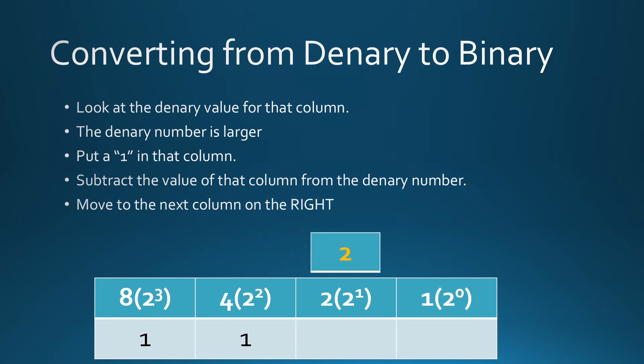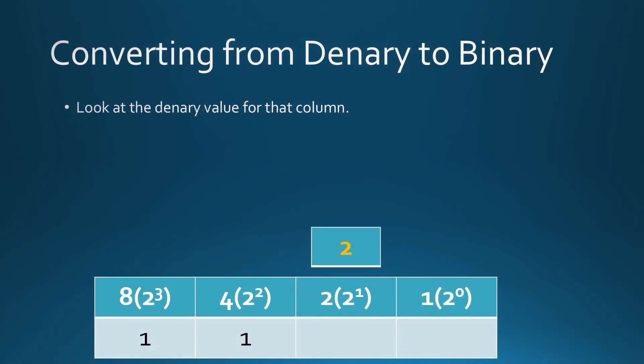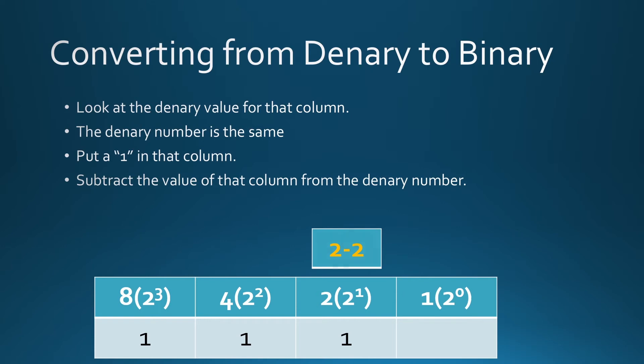Now we're going to compare that. Is it larger or is it the same? It's the same in this case. So you can get a 2 into 2, so put a 1 into it. And now take away the value of that column, 2 minus the 2, that's going to leave you nothing. So no matter how many more columns you now have to the right, every single one of those columns now is a 0.